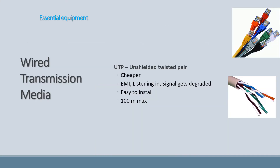There are two basic kinds of wired transmission media. When we talk about media, it is the method used for data to travel between the network and a computer. The first type is UTP, as shown in the pictures here. UTP stands for unshielded twisted pair — pairs of wires twisted around each other, with no silver sheath inside the cable to protect it. It is cheaper to make than shielded twisted pair, making UTP the cheapest form of cabling we use.